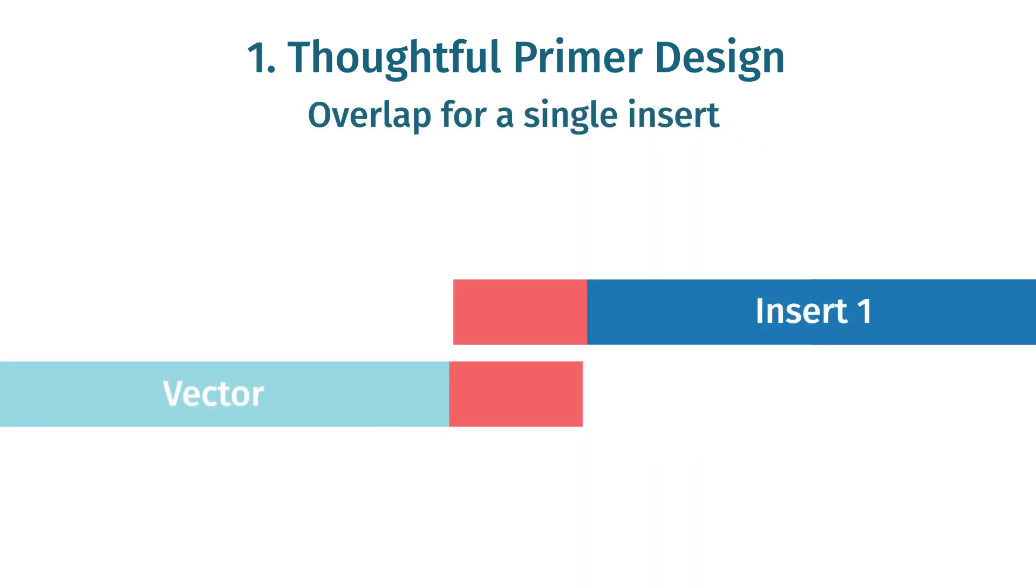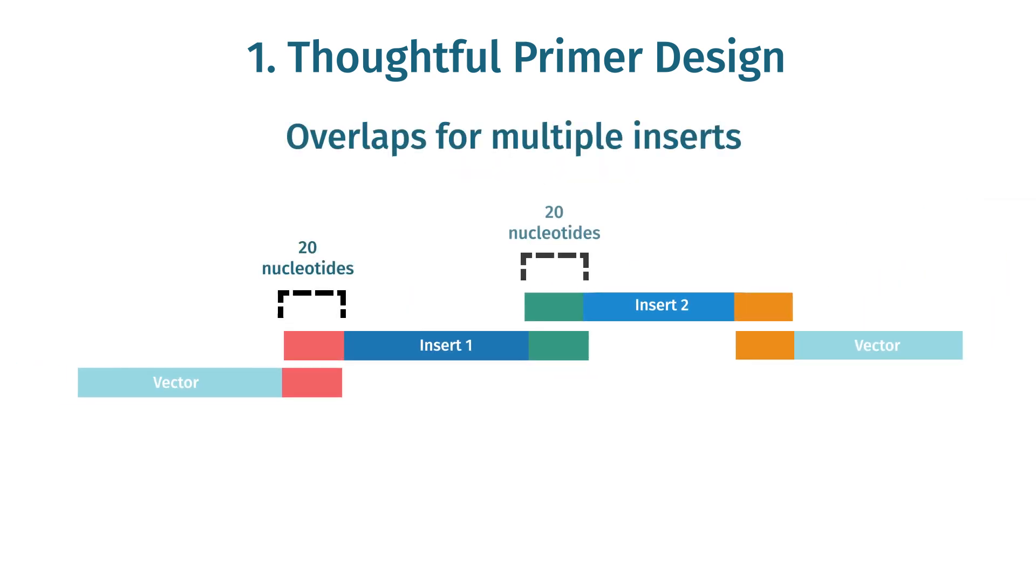Make sure that the length of the overlapping region is consistent with your cloning procedure. The overlapping tail should be 15 nucleotides long for single insert cloning reactions. In contrast, the overlaps for multi-insert protocols should extend to 20 nucleotides.